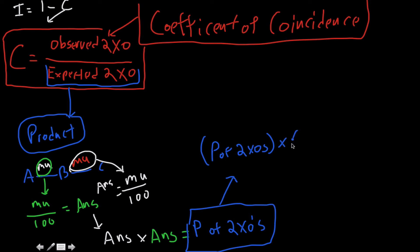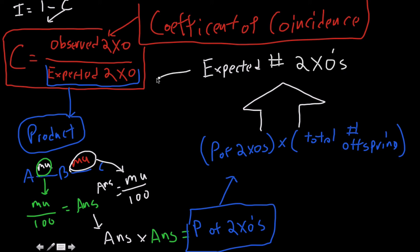So that's the likelihood of double crossovers, but we want to know the expected double crossovers. So all that you have to do to figure out the expected double crossovers is you take this, so I'm just going to say P of double crossovers, and you're going to multiply that by, again, we're using the product rule here, the total number of offspring. And so what this gives us, and I'm just going to write this in big arrow here, what this gives us is the expected number of double crossovers.